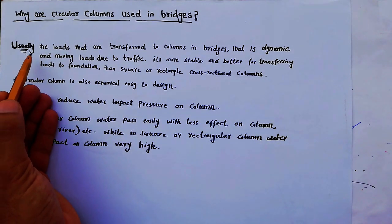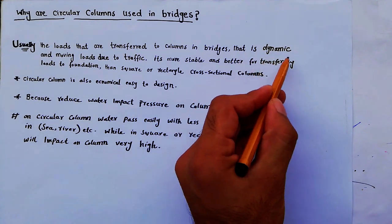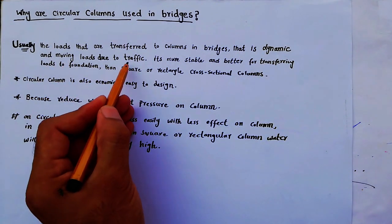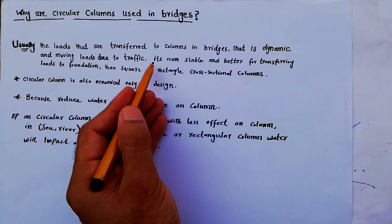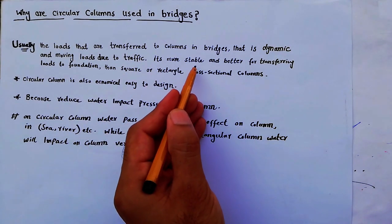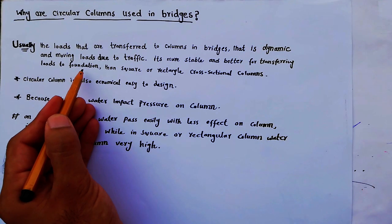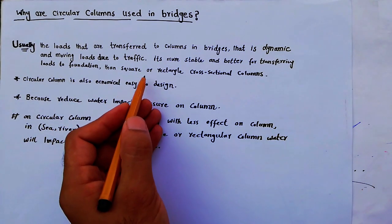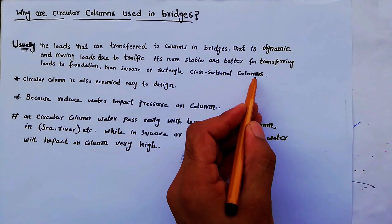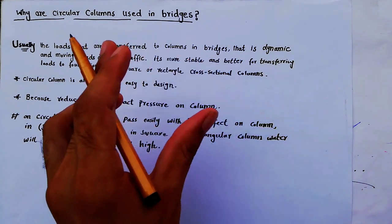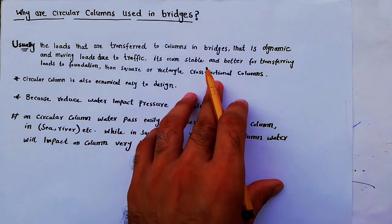Usually the loads that are transferred to columns in bridges are dynamic and moving loads due to traffic. A circular column is more stable and better for transferring load to the foundation than a square or rectangular cross-sectional column. Therefore we design circular columns in bridge construction.